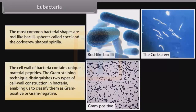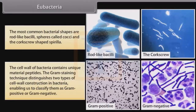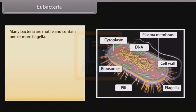The cell wall of bacteria contains a unique material — peptidoglycan. The gram staining technique distinguishes two types of cell wall construction in bacteria, enabling classification as gram-positive or gram-negative. Many bacteria are motile and contain one or more flagella.